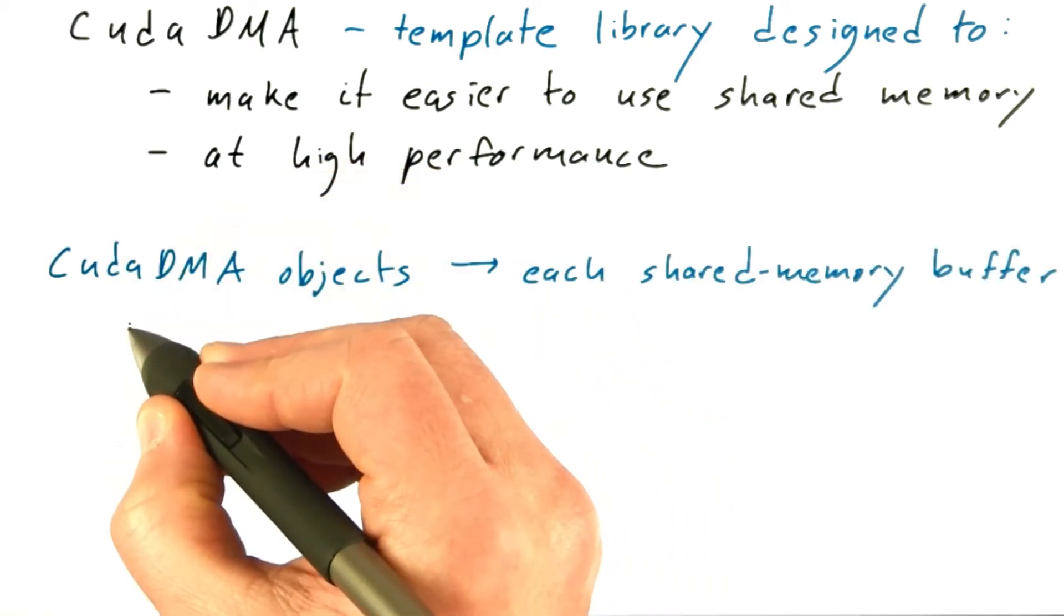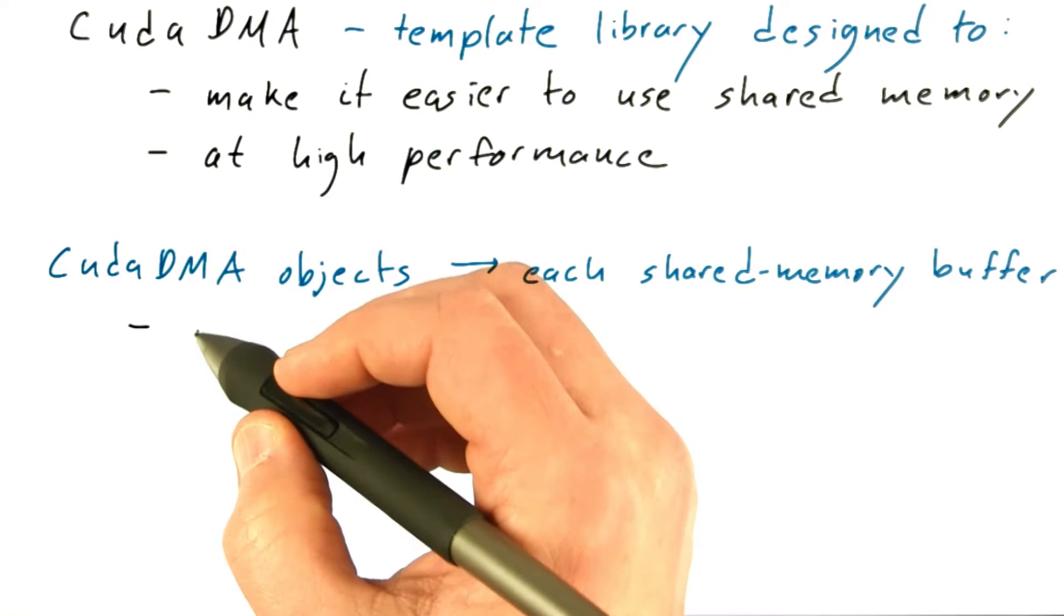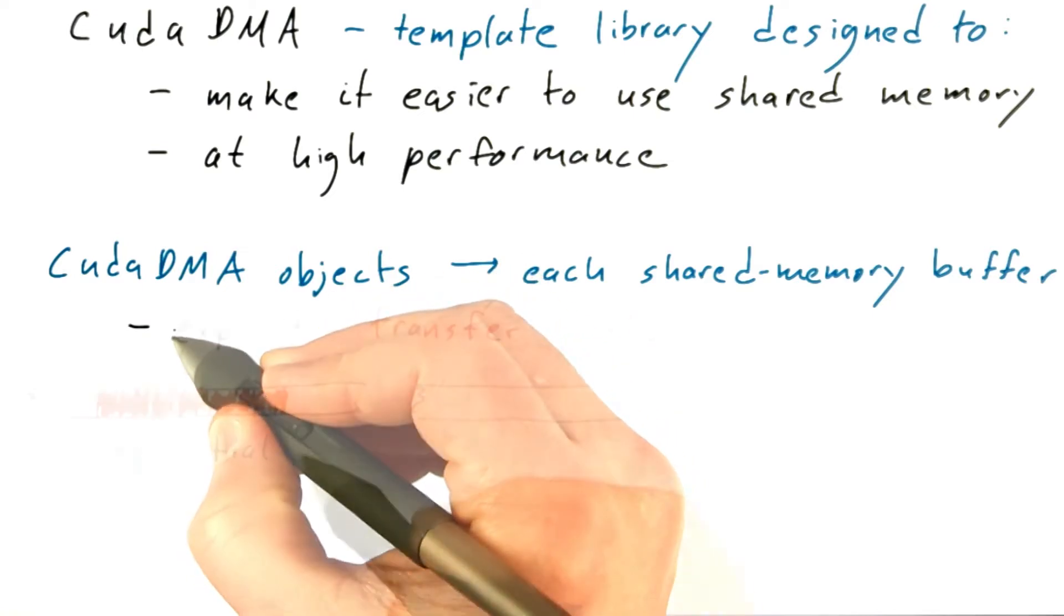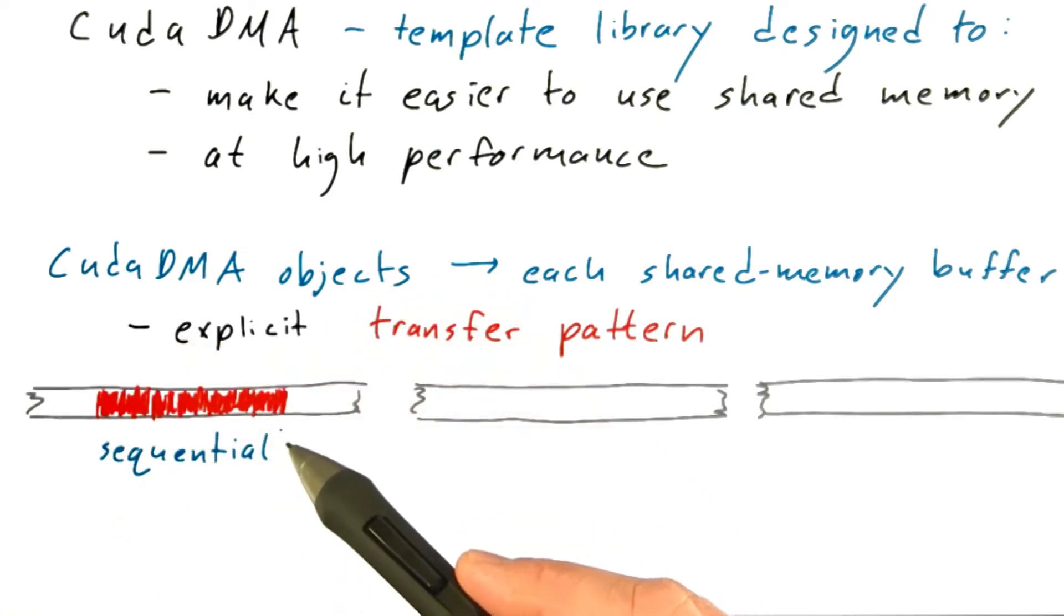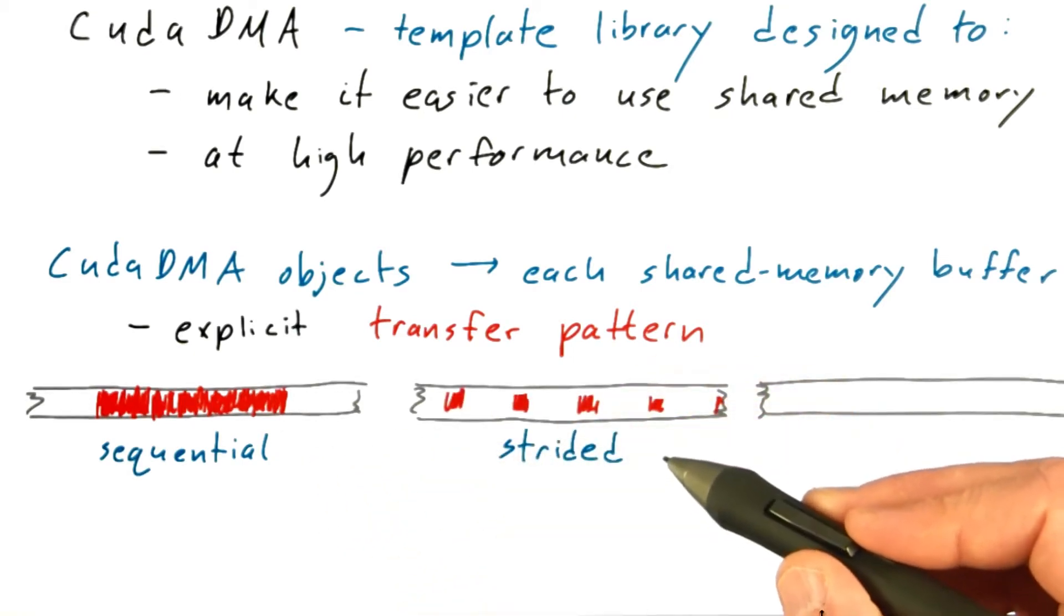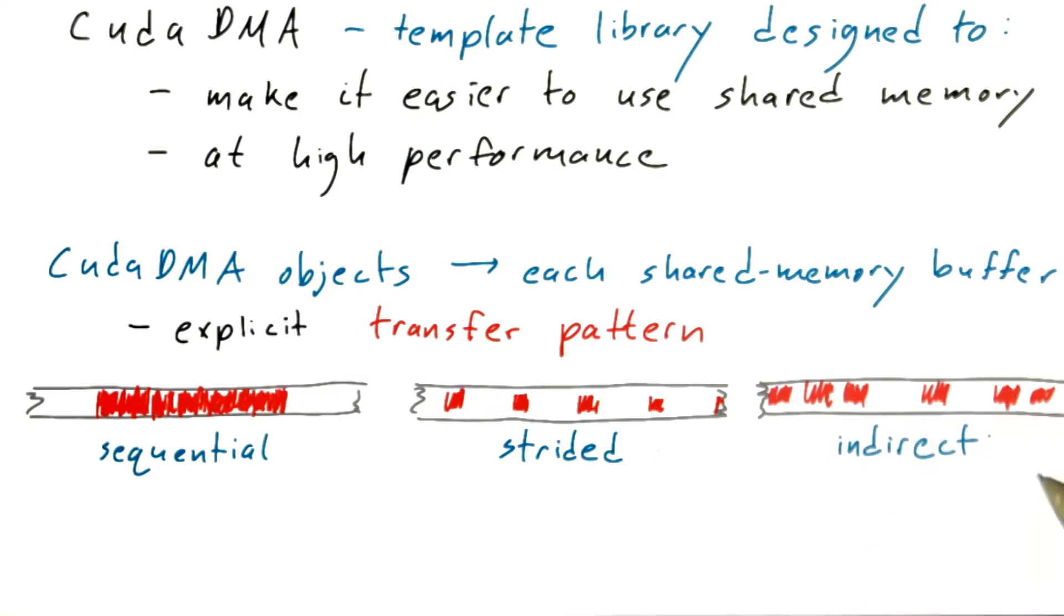The cool thing is that CudaDMA lets you explicitly describe the transfer pattern for that data. For example, you might be transferring one long sequential chunk of memory, strided chunks of memory, or doing some sort of indirect access to memory, such as you'd find in a sparse matrix representation.